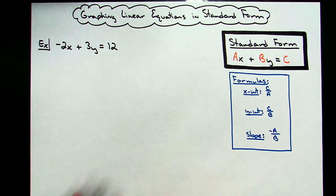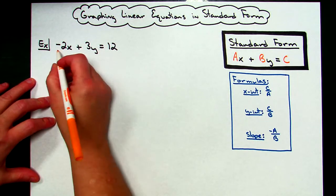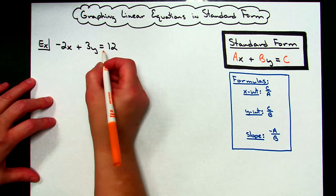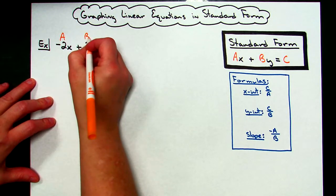Using the formulas, if you are good at memorizing formulas for different things, then this is much quicker, I think, than trying to solve the equation for Y and running it in slope-intercept form. So for this first example here, I've got negative 2x plus 3y equals 12. So A is negative 2, B is 3, and C is 12.